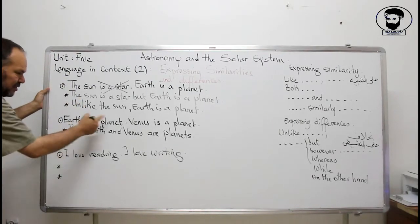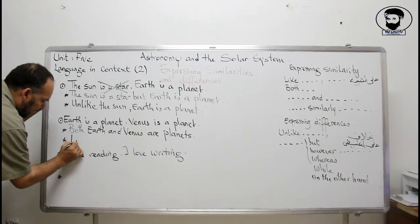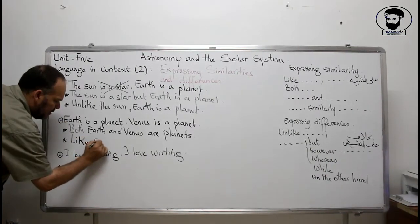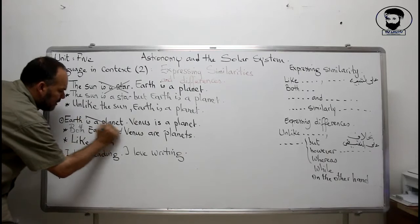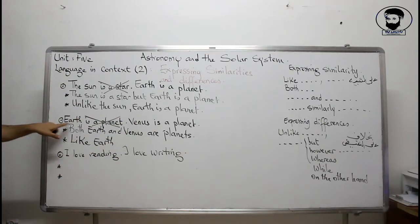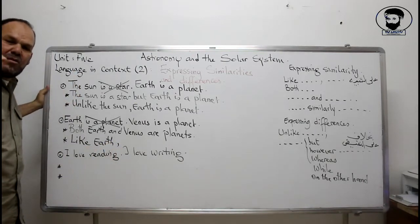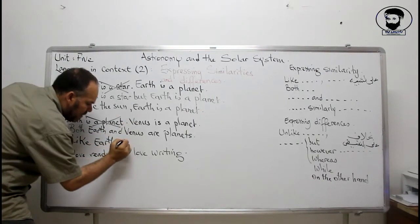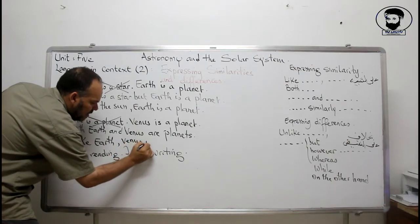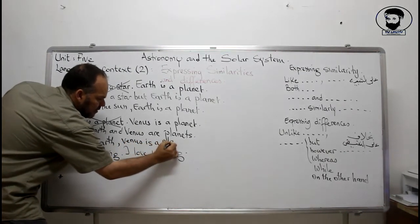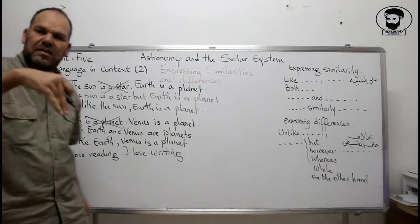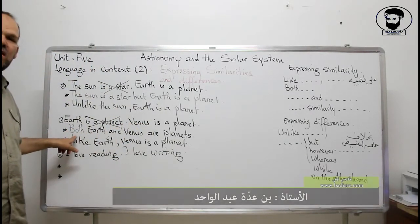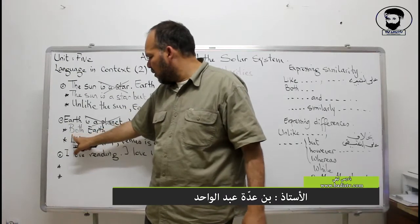For similarity you also use 'like.' The same way as 'unlike,' but now for similarity. For example: 'Like Earth, comma, Venus is a planet.' I stress the use of the comma — it's very important because you are writing. So: 'like Earth, Venus is a planet.' 'Like' here expresses similarity, not the same as 'unlike.'